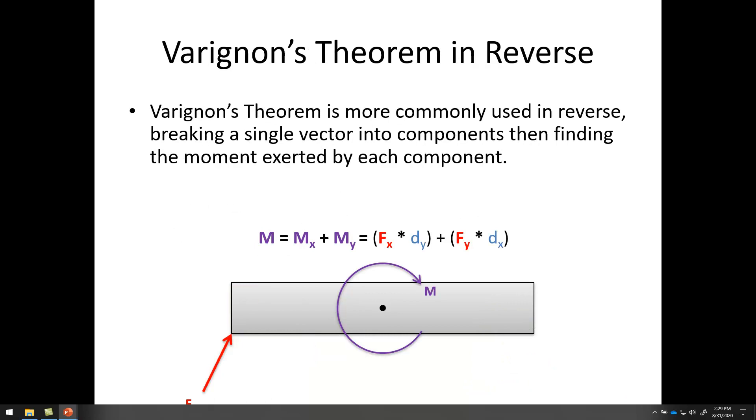So how we're more commonly going to use this is we're going to use Varignon's theorem in reverse, breaking a single vector into components, and then finding the moment exerted by each component. So imagine I've got my force F acting at the bottom and I want to figure out the moment from this force.